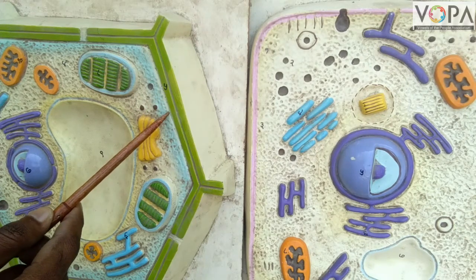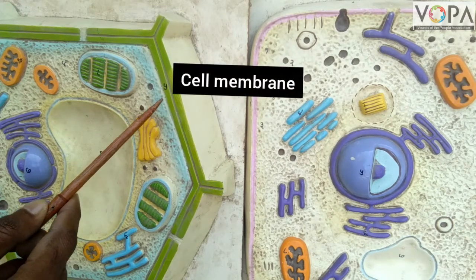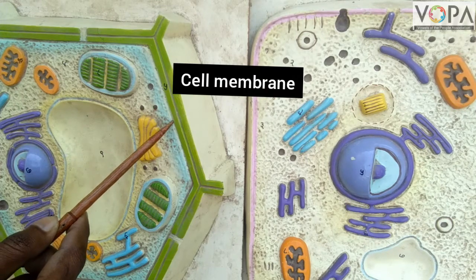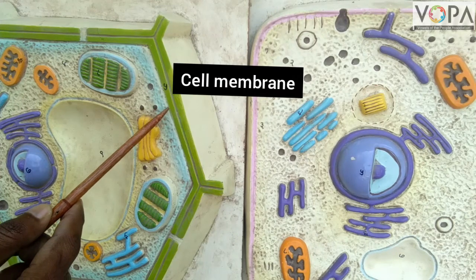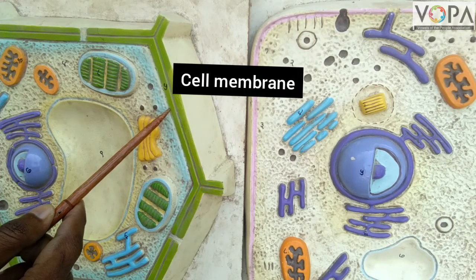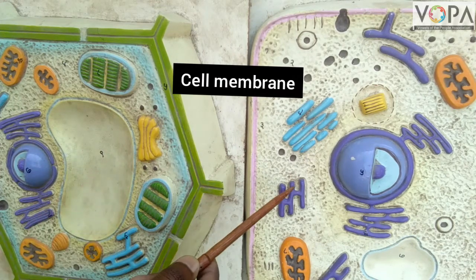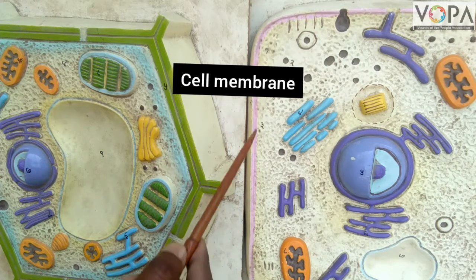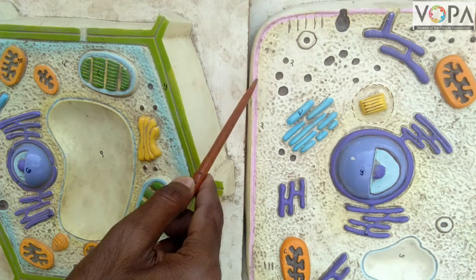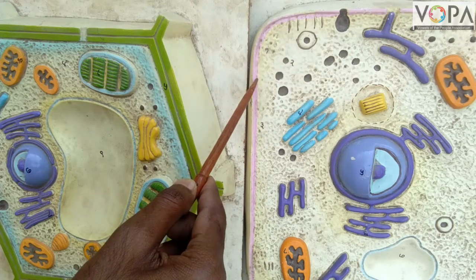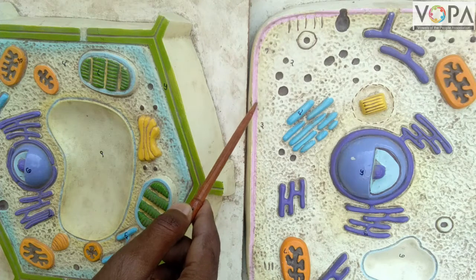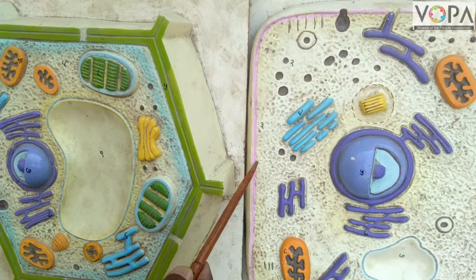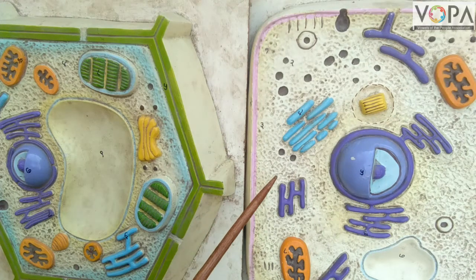This second green layer is called the cell membrane. The cell membrane is present in both these cells. Here, the pinkish color border is called the cell membrane.